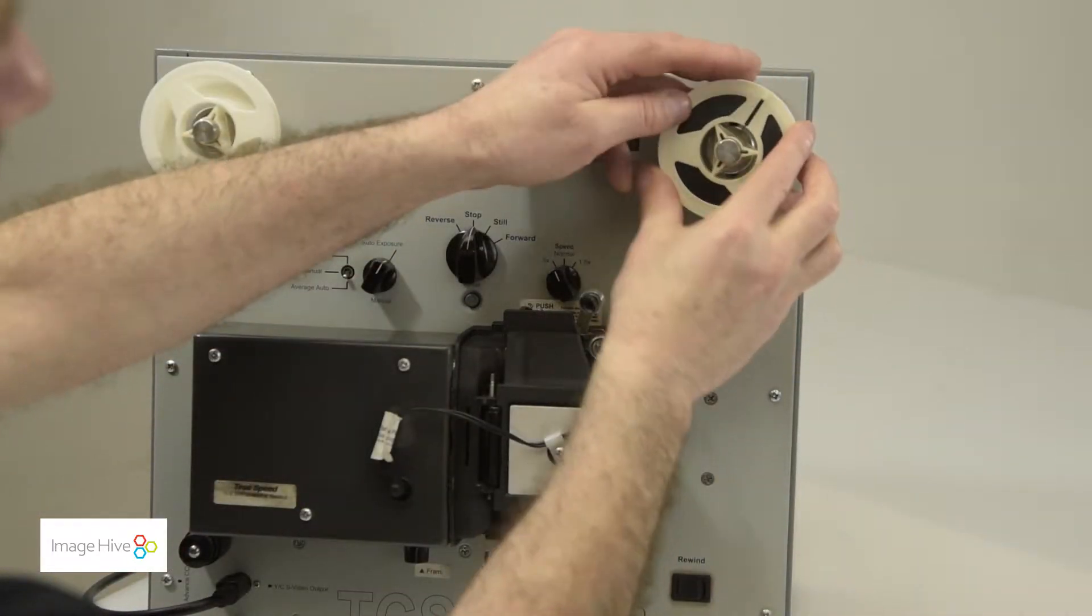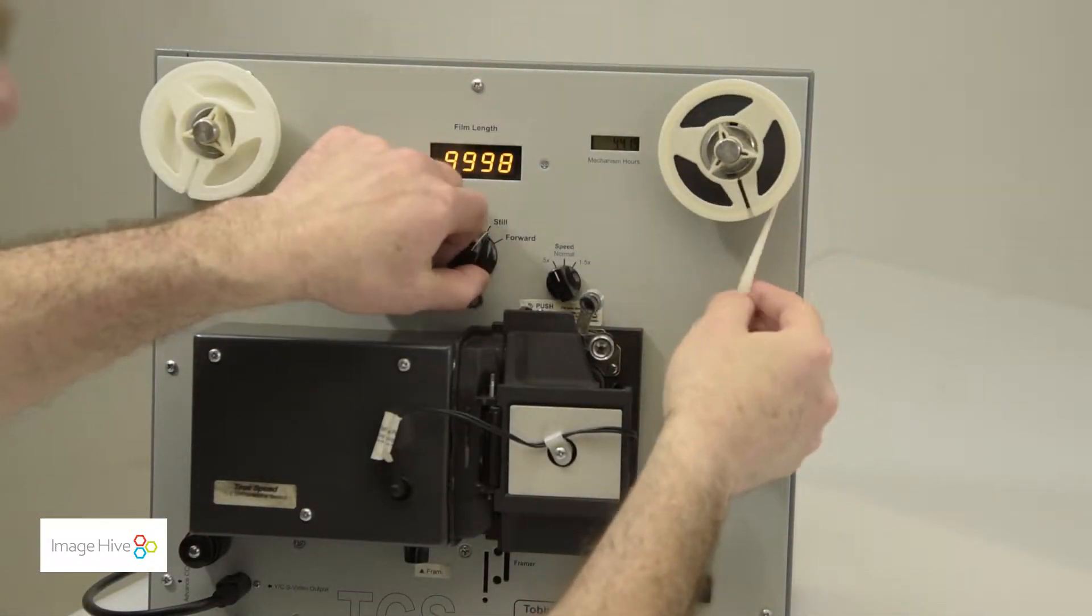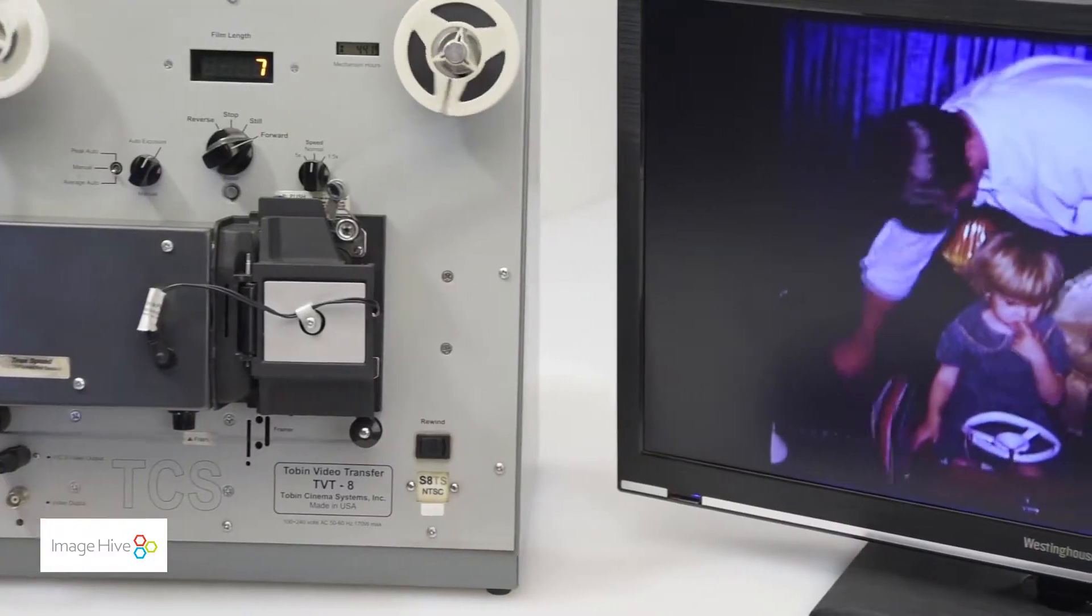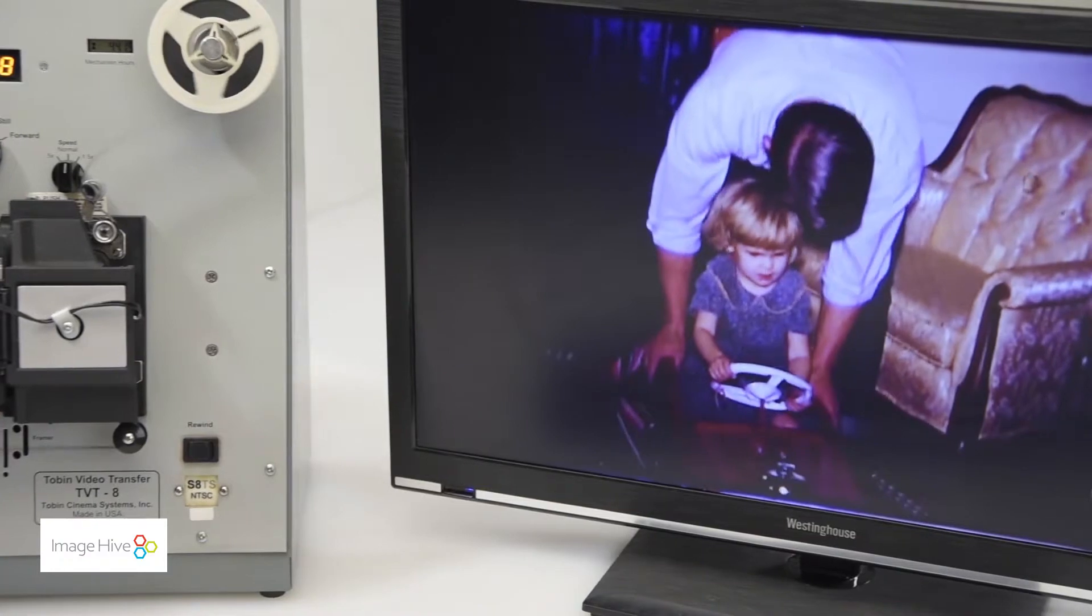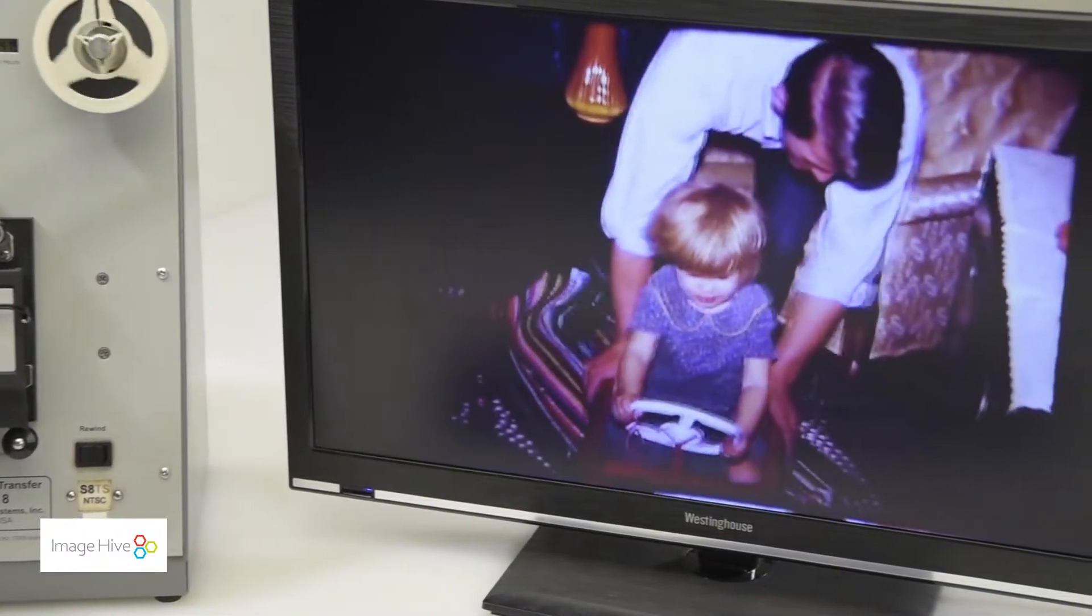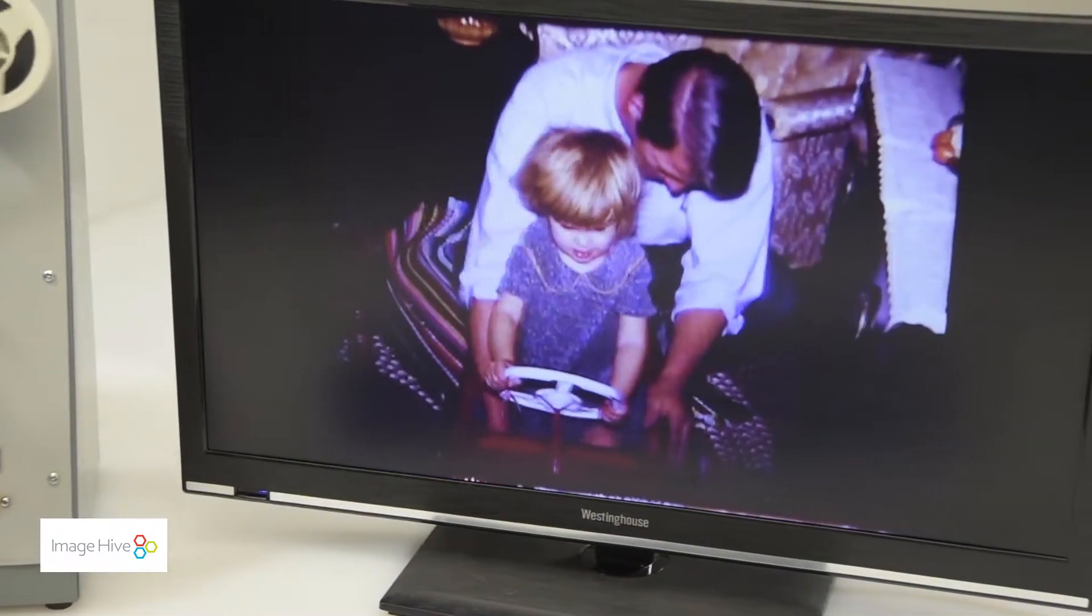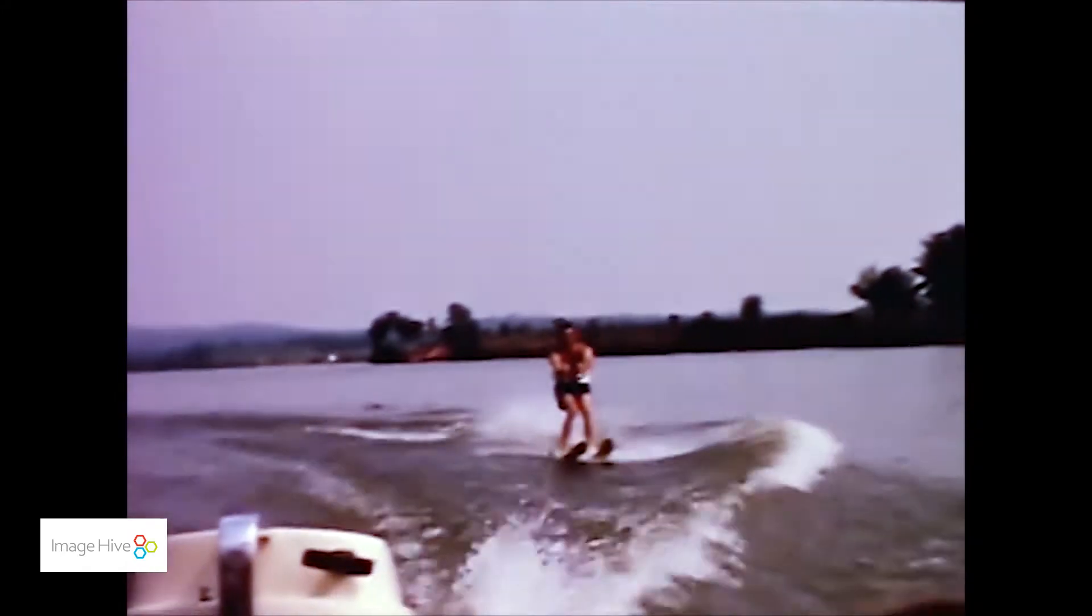The second option, which is used here at ImageHive, is more expensive and involves a process which uses machines, often in the $5,000 price range, to scan the film directly to your computer as a digital file. It's more of an investment, but the return product is vastly superior.